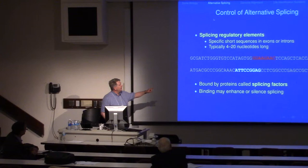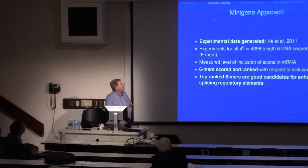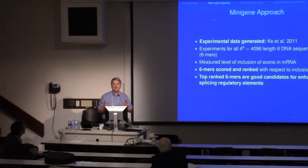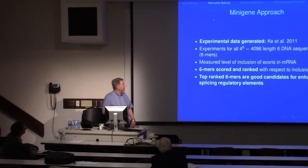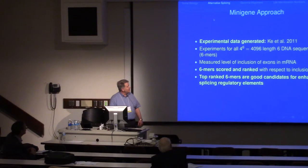What happens with splicing regulatory elements is that they are bound by proteins called splicing factors, which lead to either the splicing or the lack of splicing. We used data from Key et al., a mini gene approach where they looked at all 6-nucleotide-length sequences — measuring and putting them in many genes. They did 4,096 experiments and measured the level of inclusion of exons in the messenger RNA. They were able to rank these by inclusion, and those that are highly ranked are good candidates for being enhancing elements. We especially looked at enhancing elements in the exons.